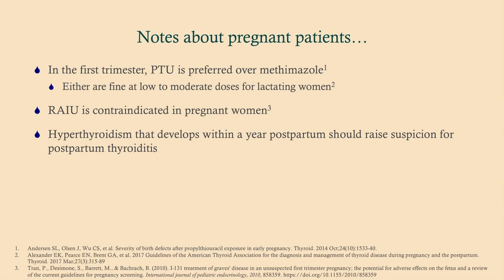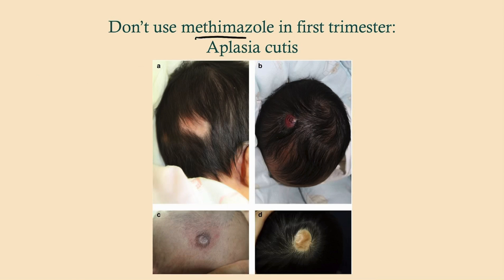Some notes about pregnant patients. In the first trimester, PTU is preferred to methimazole. Either are fine at low to moderate doses for lactating women. That RAIU scan we talked about is contraindicated in pregnant women — wait till they deliver, then work them up. Hyperthyroidism that develops within a year postpartum should raise suspicion for postpartum thyroiditis. Do not use methimazole in the first trimester because it causes aplasia cutis — localized lack of development of the dermis and epidermis, in about 70 to 80% of cases localized to the scalp, causing areas of hair and skin loss.